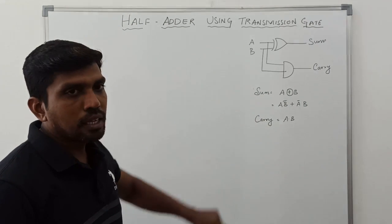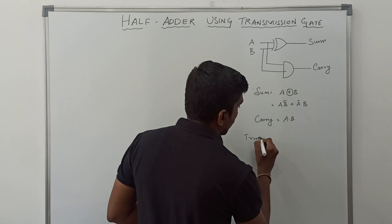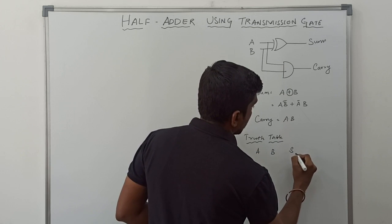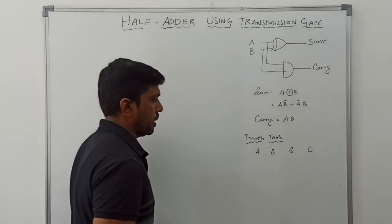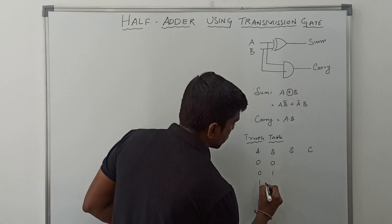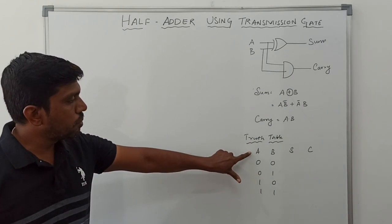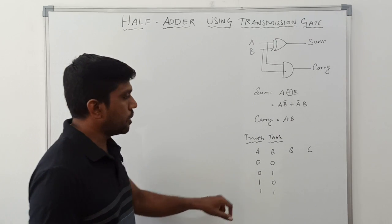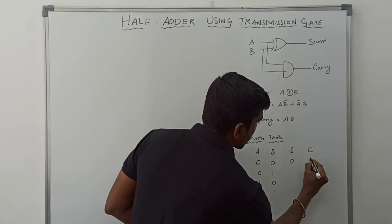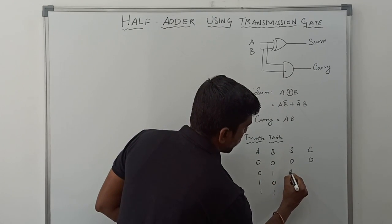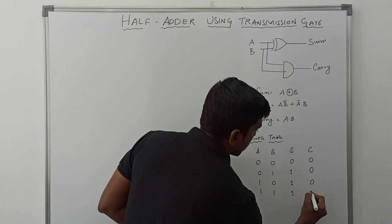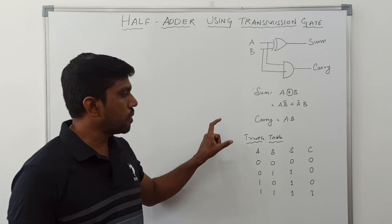Now I'm going to write the truth table for the half adder. A and B are the inputs, and this half adder gives two outputs: sum and carry. The two input variables generate four combinations: 0-0, 0-1, 1-0, 1-1. Adding the values: 0+0 gives sum=0, carry=0; 0+1 gives sum=1, carry=0; 1+0 gives sum=1, carry=0; 1+1 gives sum=1, carry=1. So it's the truth table for the half adder circuit.